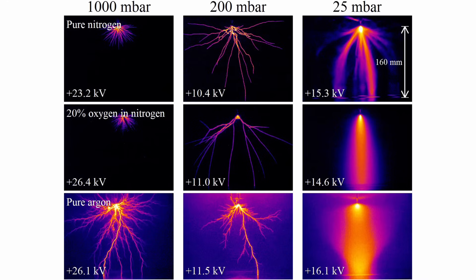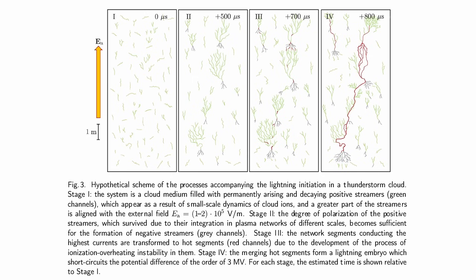The mechanisms of streamer leader transition in thunderstorm clouds devoid of metal electrodes remains unclear. A cold and weakly conducting streamer channel alone cannot create a leader.